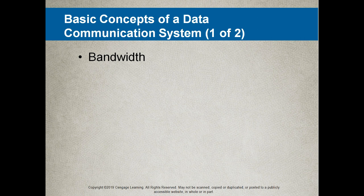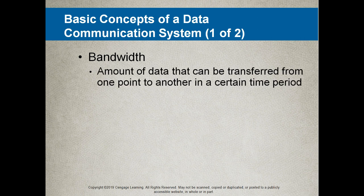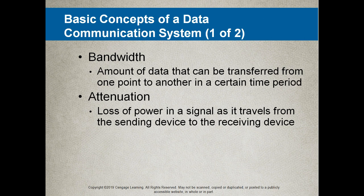Let's take a look at the term bandwidth. This is the amount of data that can be transferred from one point to another in a certain time period. Attenuation is the loss of power in a signal as it travels from the sending device to the receiving device. In general, the greater your bandwidth, the greater the amount of data you can send in one second.